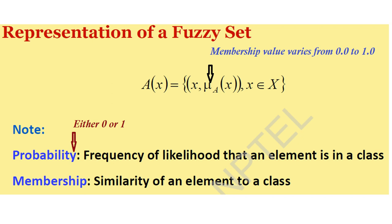Now let us come to the representation of a fuzzy set. A fuzzy set A of x is represented as a collection of pairs (x, mu_A(x)) where x belongs to the universal set X. That means to represent the fuzzy set, we take the help of a membership value which varies from 0 to 1. And if you remember, the probability value also varies from 0 to 1, but truly speaking, the concept of probability and the concept of membership are not exactly the same.